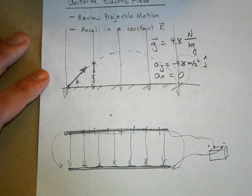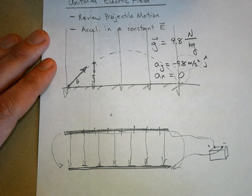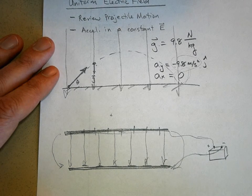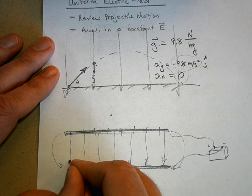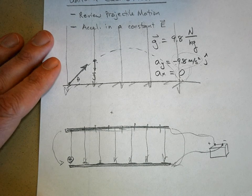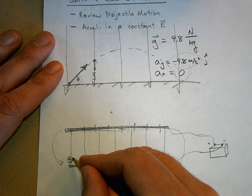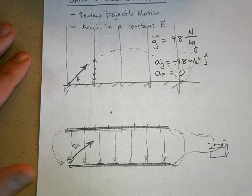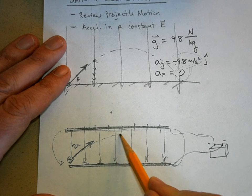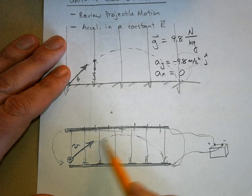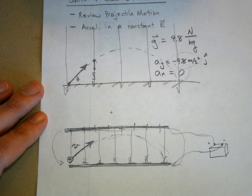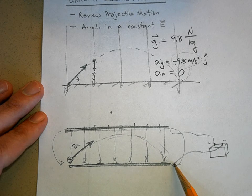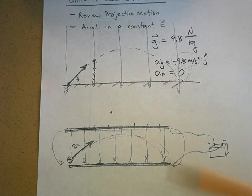What would happen if you took a little positive test charge in that uniform electric field and launched it at a certain velocity? It's going to move in a parabolic path - it looks just like projectile motion under gravity. But now the force causing the change in velocity is not gravity - it's the electric force.